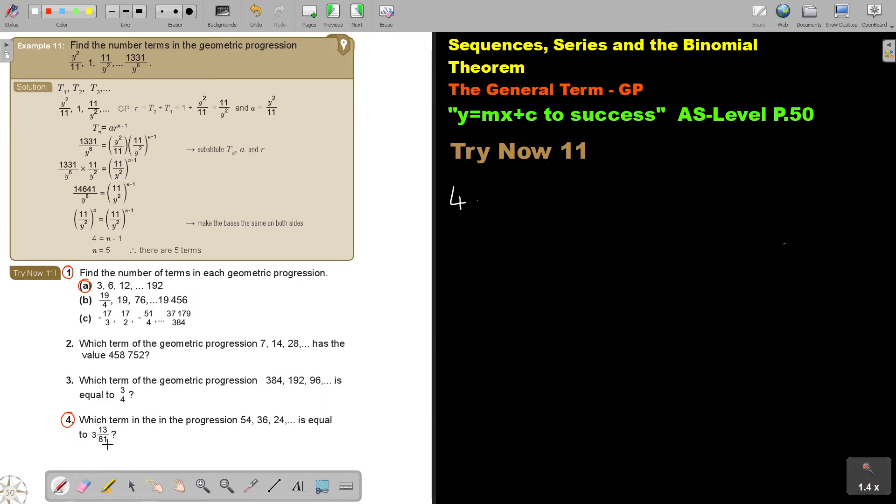Which term in the progression is equal to this? I was doing this because it's a bit of a fraction. So let's first write it down. It's 54, 36, 24. And here comes the term. And it's 3 and 30 over 81. Don't forget, this is term 1, term 2, term 3, and this is TN. And don't forget your general formula. TN equals ARN minus 1.